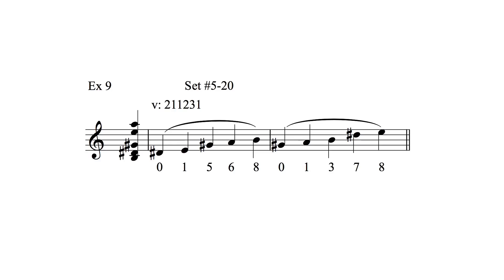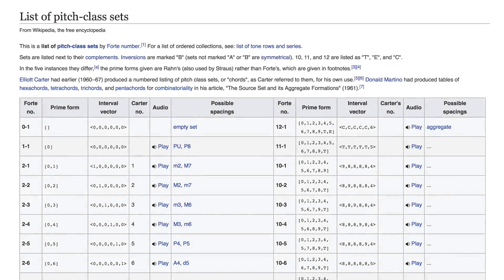That's just the way sets are named — squeezed into one octave, with the smallest intervals at the beginning. The complete list of chords using these normal forms was put together by music theorist Alan Forte, and it's easily available on the web. We're going to use the one on Wikipedia, called the list of pitch class sets. But even if you can't find that one, if you just search 'list of pitch class sets' you'll find several sites which give the list.